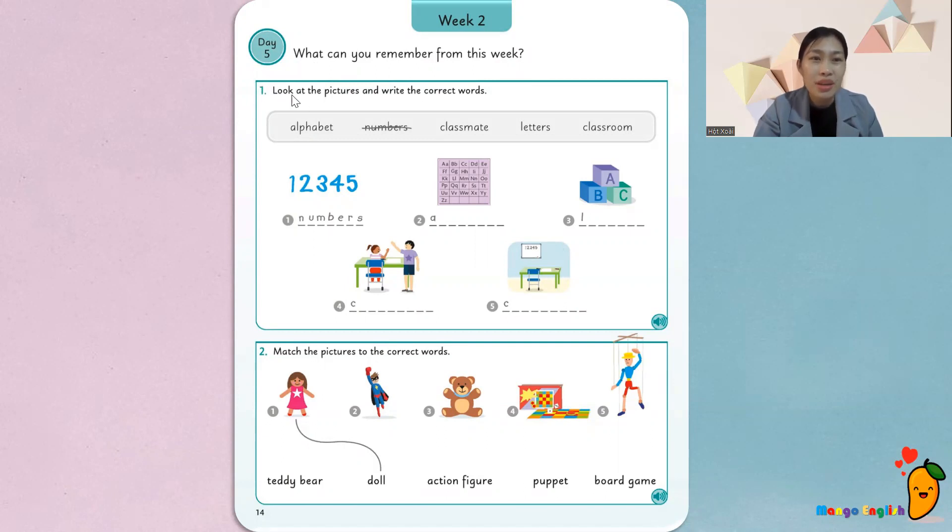Okay, that's one. Bài đầu tiên, look at the pictures and write the correct words. Hãy nhìn vào các bức hình và viết những từ đúng có nghĩa là đáp án đúng. Nhìn hình và viết ra đáp án. Trên này đã có đáp án sẵn rồi. Chỉ cần viết xuống thôi. Nhìn hình này, hình này là hình gì?